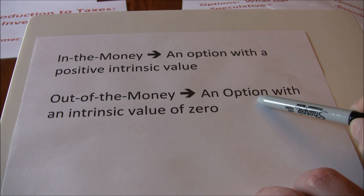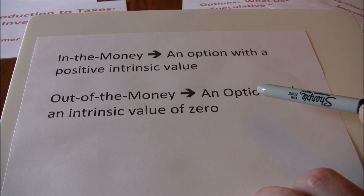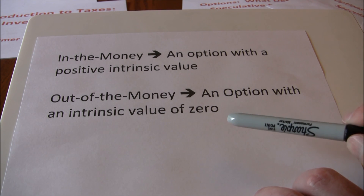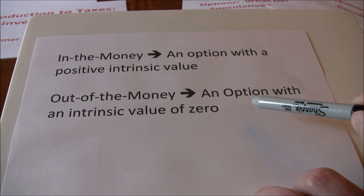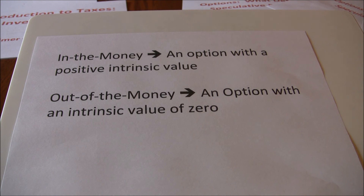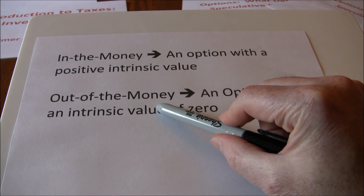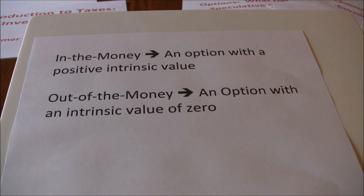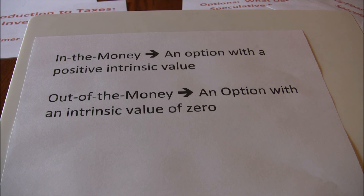You might also hear the term 'near the money,' meaning the stock price is close to the strike price. If we have a deep in-the-money option, that would be a case where, for a call option, the stock price is far greater than the strike price — for example, our June $350 Apple call with a stock price of $400 would be a deep in-the-money call option. A deep out-of-the-money call option means the stock price is far away from the strike price — maybe the current stock price is $300 and our strike price is $350, so the stock would have to rise by $50 to be in the money.